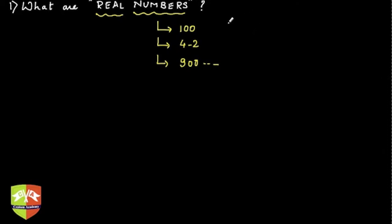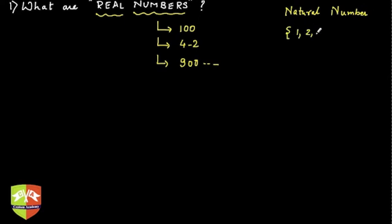Since childhood we have encountered different types of numbers. The first type of number you studied was natural numbers — the counting numbers: 1, 2, 3, 4, and so on. We represent this set by the letter N. But the problem with natural numbers was they couldn't represent everything we needed.